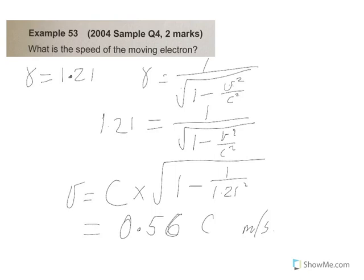And now we need to do a fair bit of manipulating around. And when we do our fair bit of manipulating around, what we would get is this: v equal to the speed of light times the square root of 1 minus 1 over 1.21 squared. And when you do that, you find that that comes to be 0.56 of the speed of light, meters per second. Alright, so there's a fair bit of mucking around there with that squaring and swapping sides and stuff.